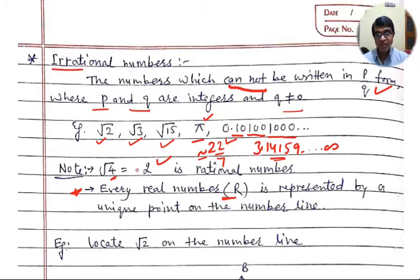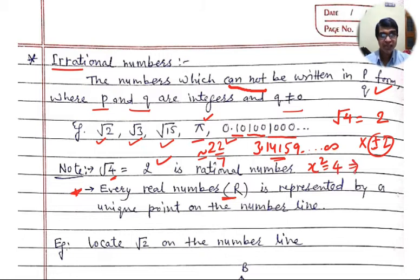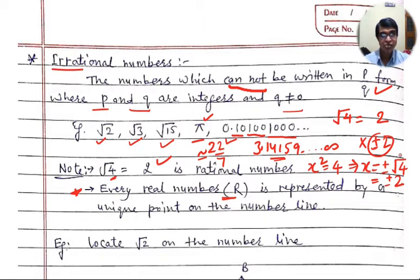One confusion for students: is root 4 equal to 2 or plus minus 2? I will clear that. Under the square root, only the positive value is the real number, so root 4 is only 2, not plus minus 2. We get plus minus 2 only in the case where x squared equals 4, because then x equals plus minus root 4, which gives plus minus 2. That is because x is squared — it is degree 2 — so we have 2 roots. But the value of root 4 itself is only 2.